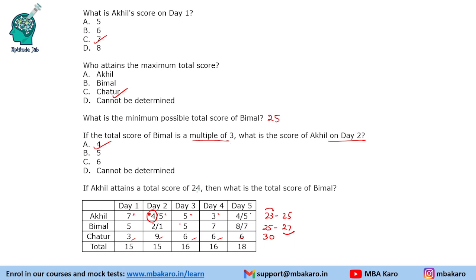If Akhil attains a total of 24, what is the total score of Bimal? The total score of Akhil, Bimal, and Chatur combined is 80. Chatur's total is 30, so Akhil plus Bimal equals 50. Since Akhil is 24, Bimal's total score will be 26.